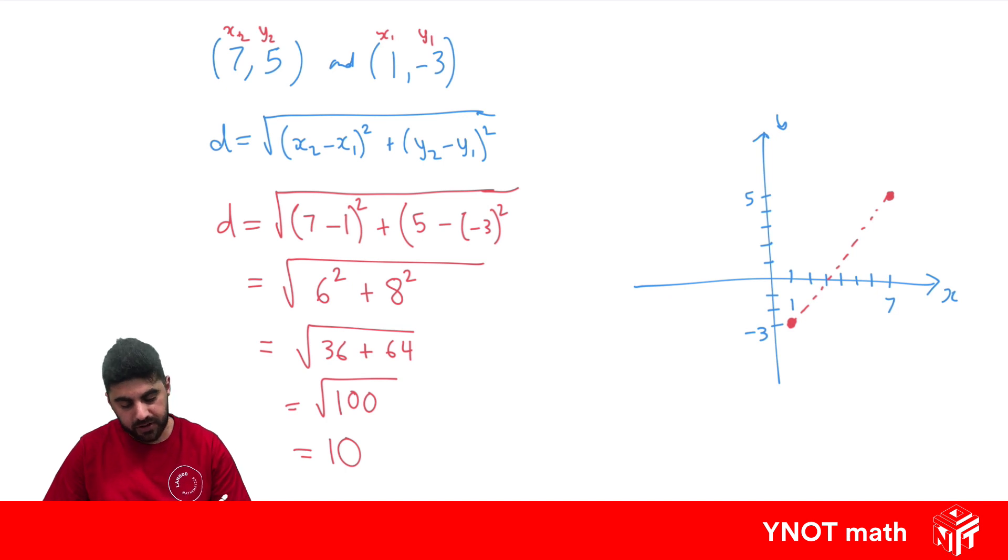This formula actually comes from Pythagoras, where you'll see that we're finding the difference in y values and the difference in x values between the two points, and we're squaring them and square rooting them to get the hypotenuse.